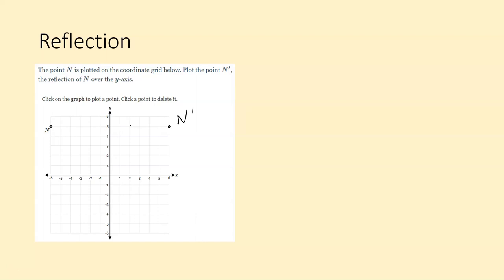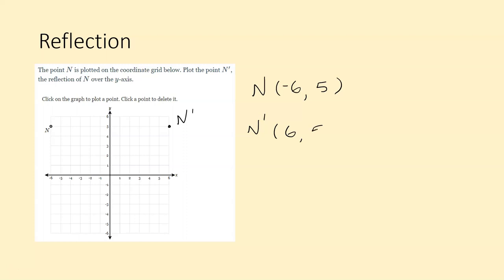Counting six units across to the right side: N is at negative 6 comma 5, so N prime would be at 6 comma 5 if we are reflecting over the y-axis.